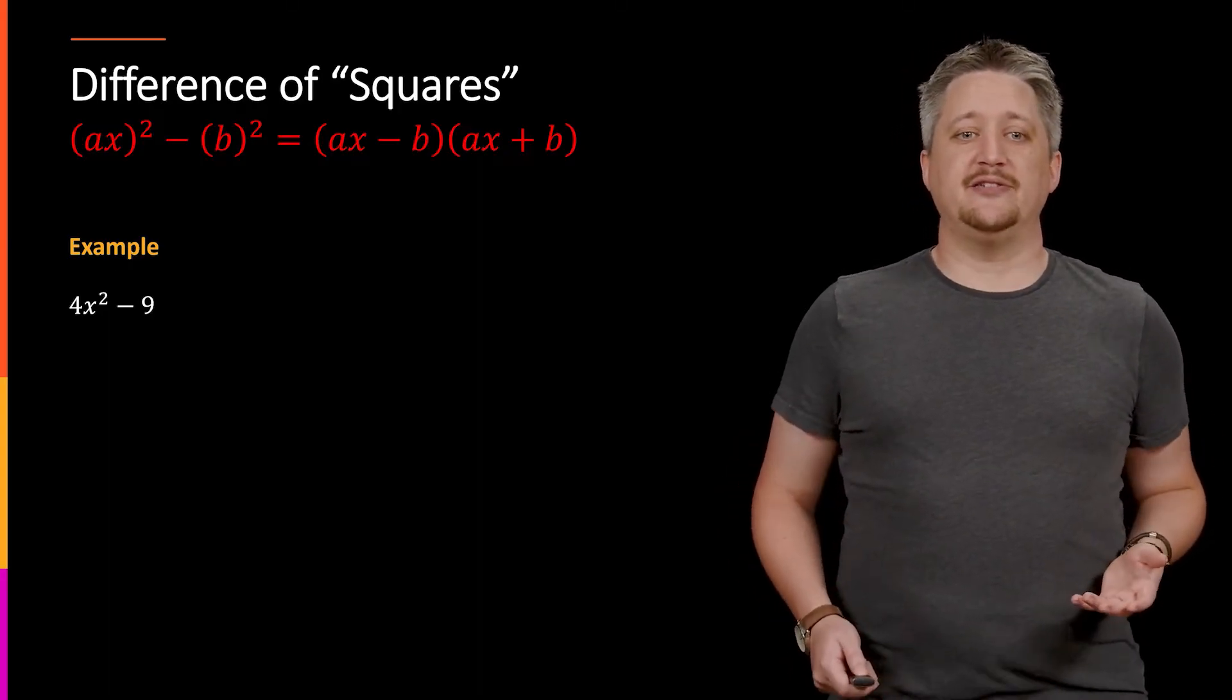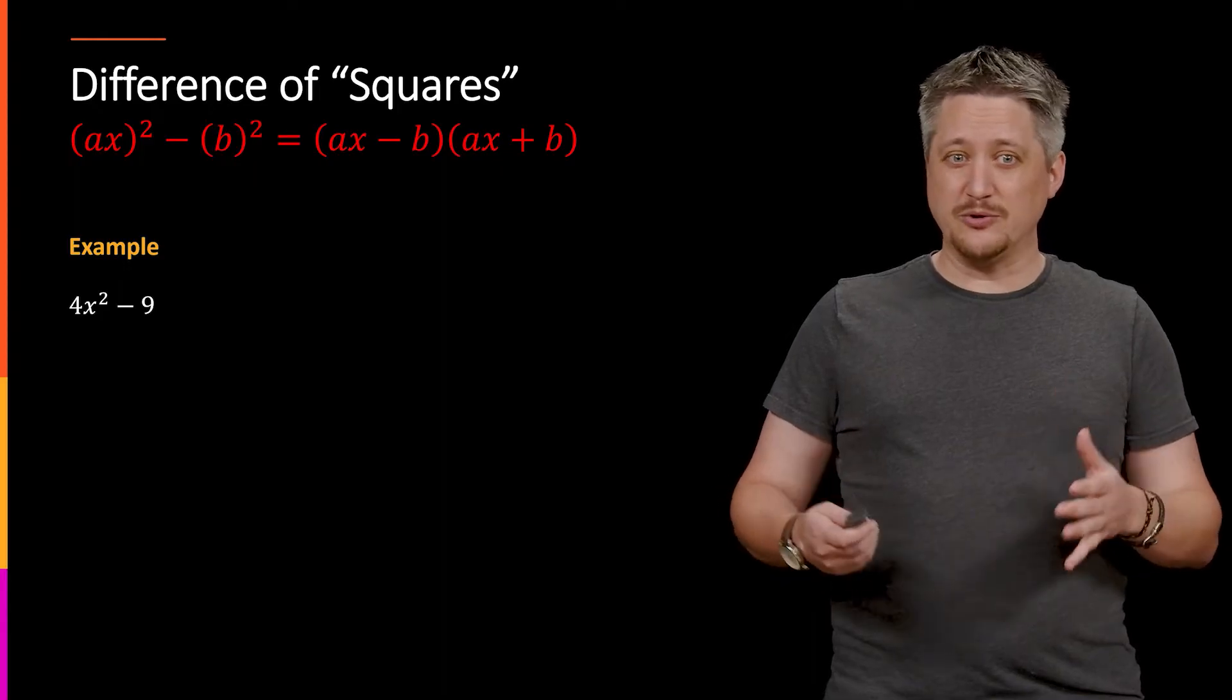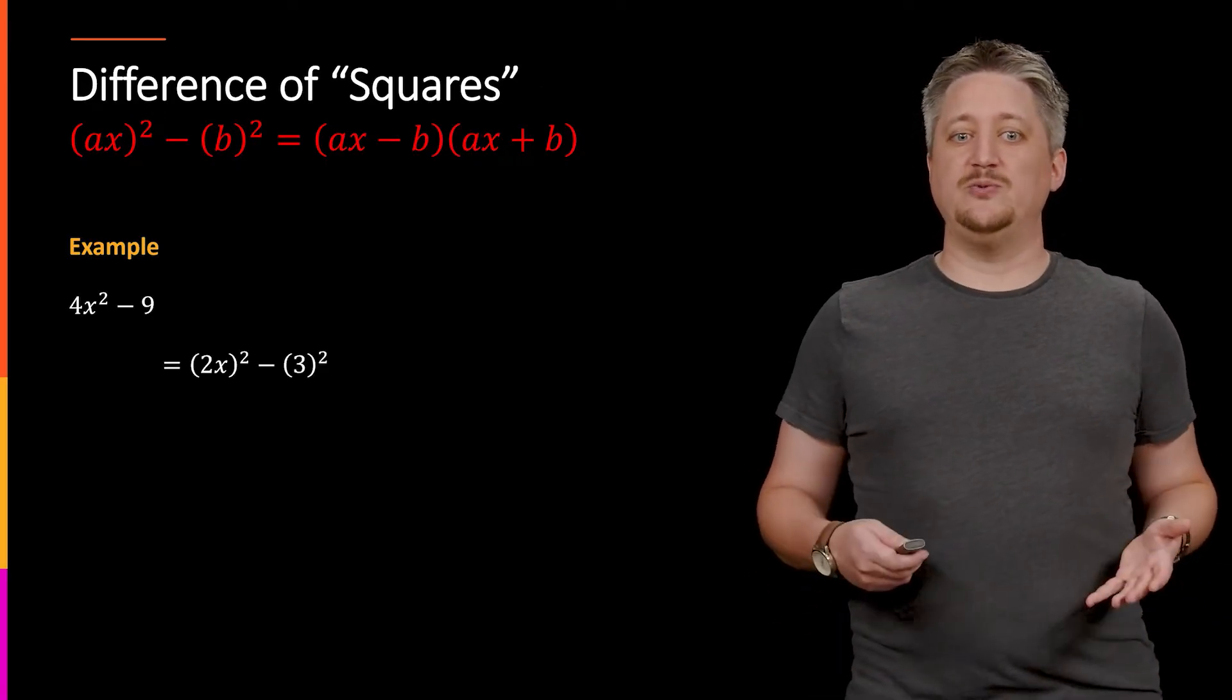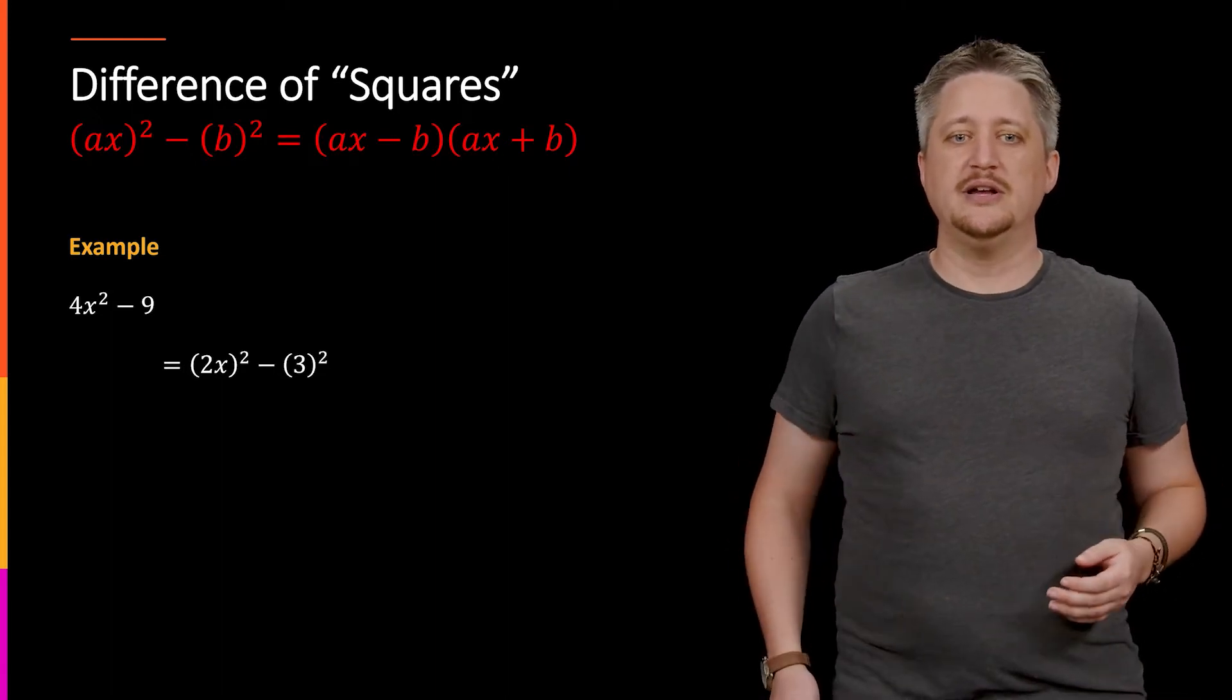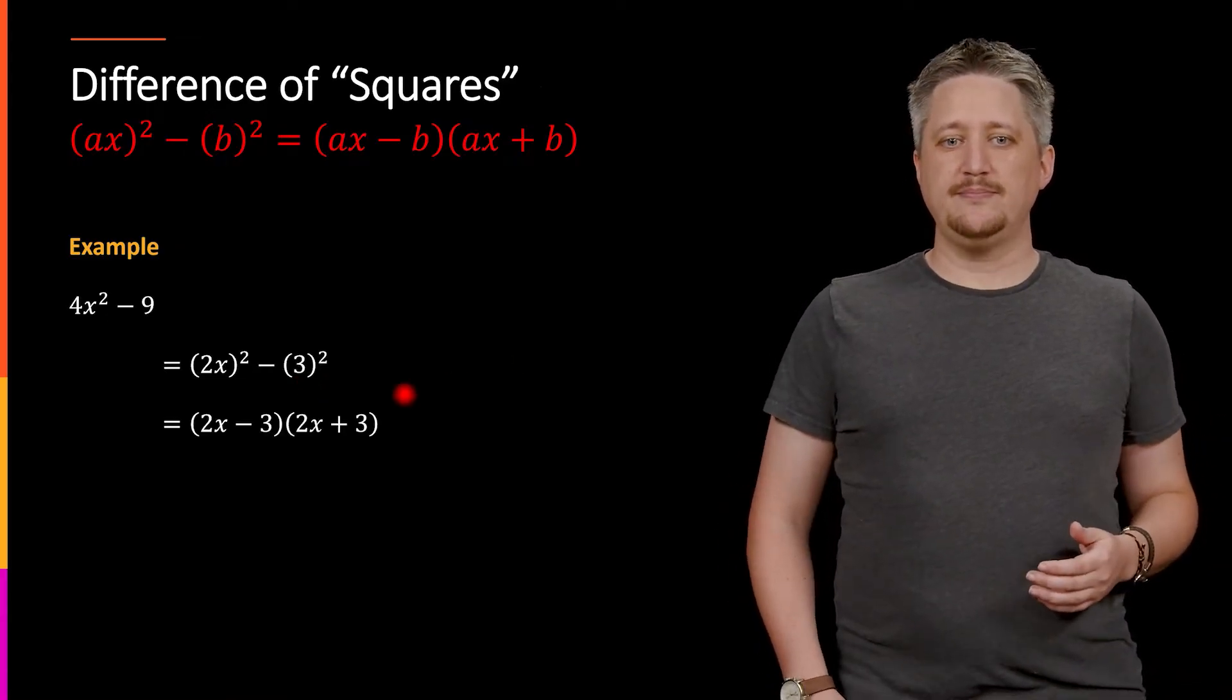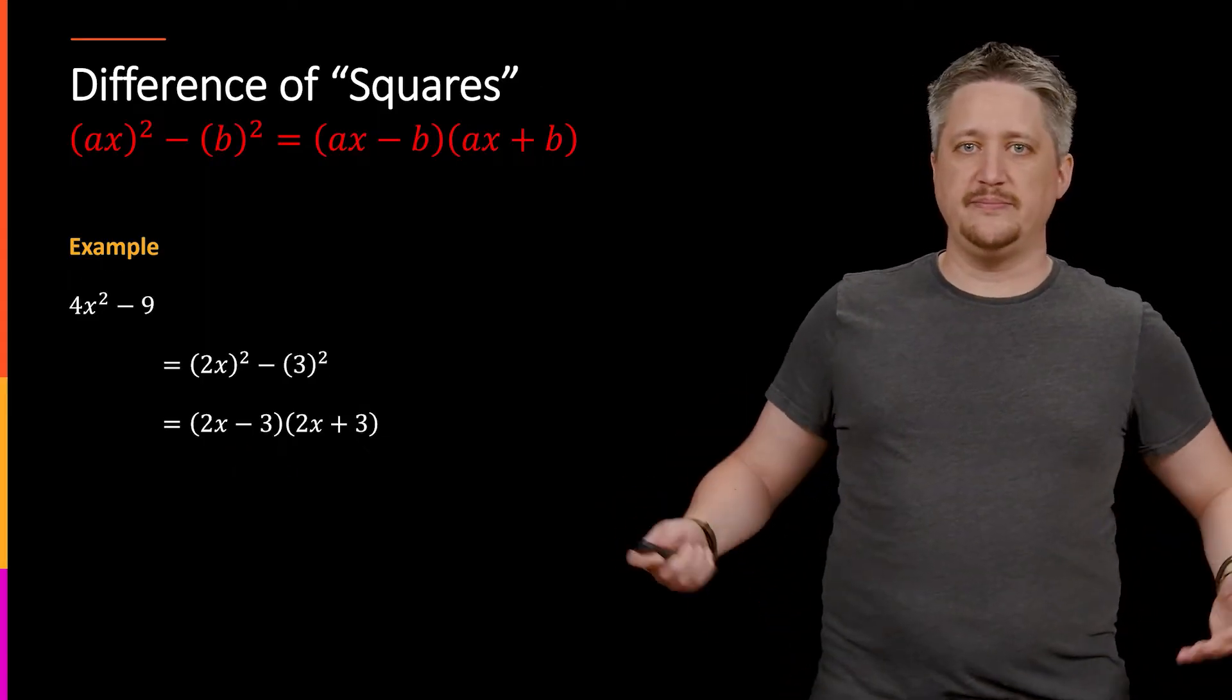Now I can rewrite this in the form of something times x quantity squared minus something squared. In this case, what squared gets me 9 or what squared gets me 4x²? Here I'm going to have 2x as that first bit, so (2x)² - (3)². Here the a is effectively 2, the b is effectively 3, and then I can immediately use that difference of squares formula. So I get the base term, the 2x and the 3, I'm going to take their difference and their sum, multiply these two things together.